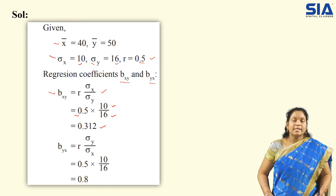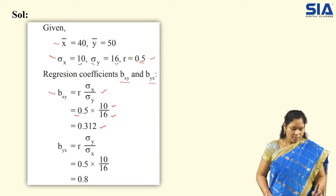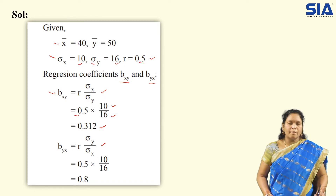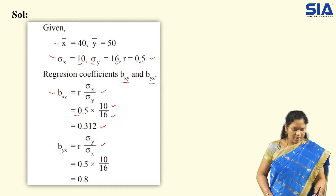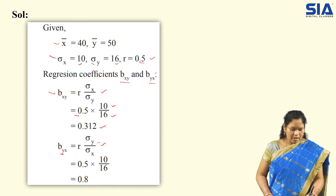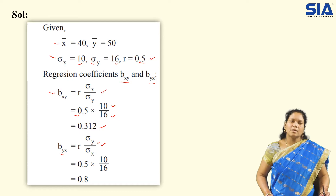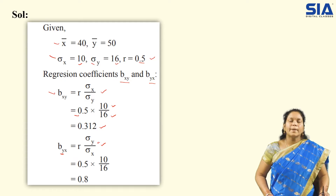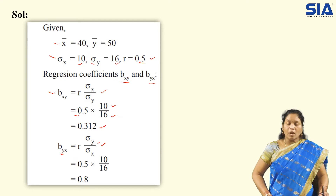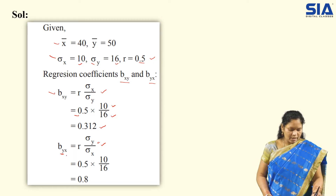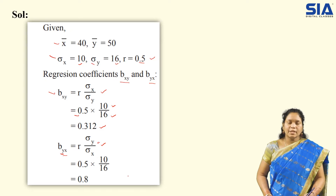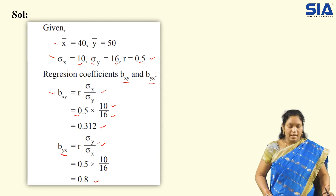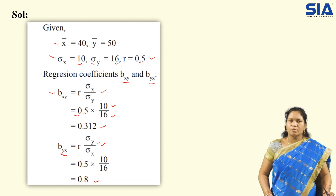Next, let us find the regression coefficient byx. The formula is r × (σy / σx). How to remember the formula: whichever variable comes first, that should be the numerator. So for byx, σy comes up. This way there is no confusion between the two formulas. Substituting all values, byx = 0.8. Both regression coefficients are now obtained.